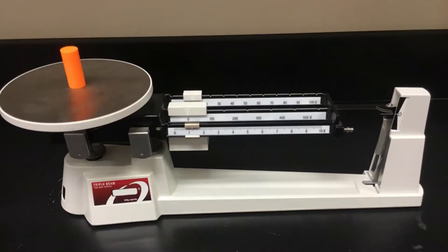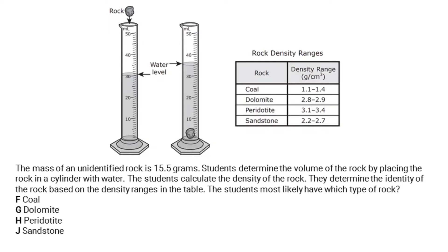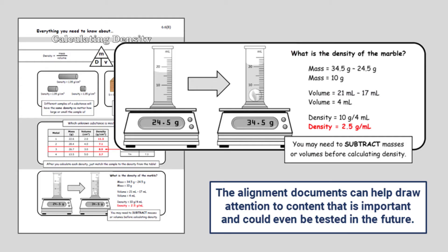Students will need to know how to find the mass of liquids and solids using a scalar balance, and they will need to know how to find the volume of liquids and solids using a graduated cylinder. This skill was actually a part of the 2019 question from this standard. You may notice that finding the mass of a substance using a scalar balance has never been a part of a STAR question from this standard. However, this is an important skill that students will need, and it is shown on the alignment document.